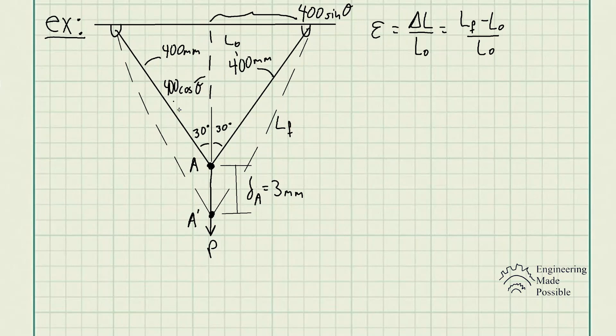We have this length 400 cosine theta, and when it comes to the new triangle that we're drawing, which is from this point down to A prime attached to this attachment point here, we see the length is 400 cosine theta plus this additional length of 3 millimeters. So we have this total length of the triangle, and this remains the same: 400 sine theta.